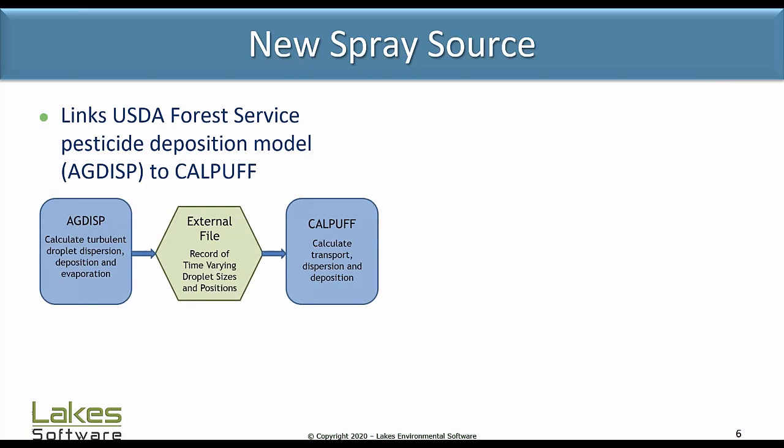This new agricultural spray source is pretty interesting. It links the USDA Forest Service pesticide deposition model called AgDISP to CalPuff. AgDISP is used to calculate droplet dispersion, deposition and evaporation of pesticide releases from aerial spraying activities over large fields. With this connection, AgDISP can produce an external file with time-varying droplet sizes and positions, which acts as any other external source file input to CalPuff — just as you can have an external file with time-varying emissions for other source types like points, areas, or volumes. CalPuff is then capable of calculating transport, dispersion and deposition into the long-range field.